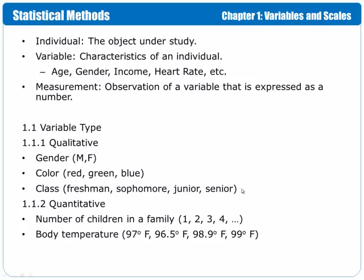Essentially, you're looking at grouping type variables, where the different values for each variable represent categories. Then we have quantitative variables, where the results are numbers. So, for example, the number of children in a family, one, two, three, four, and so forth. Or body temperature, by degrees.